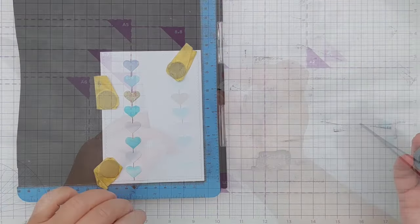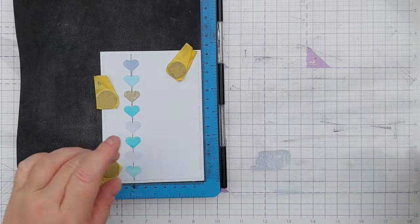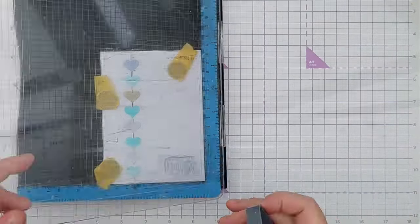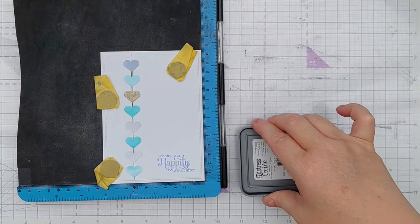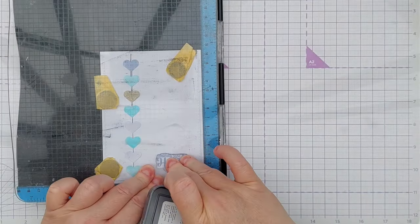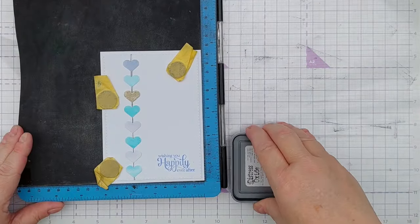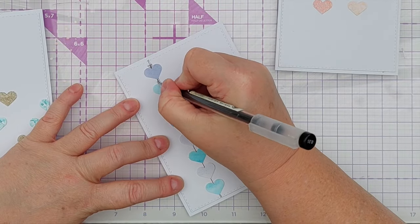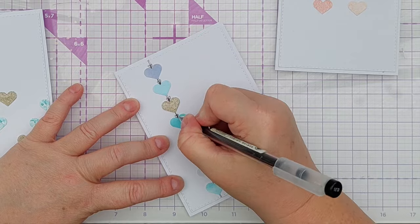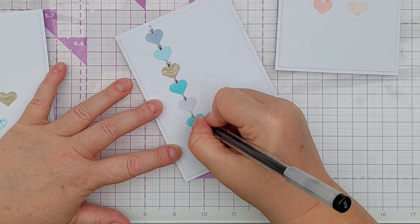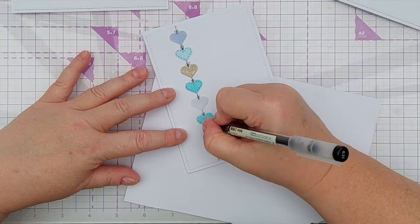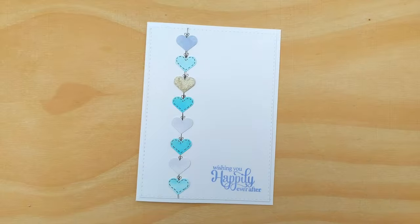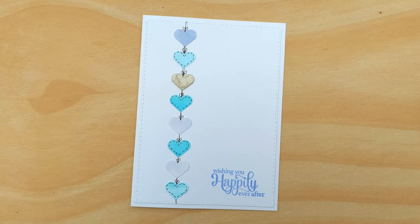Once the glossy accents were dry I put the card in my stamp positioner and stamped on a wishing you a happily ever after sentiment in shaded lilac so that it matched the lilac hearts. I did feel that the hearts needed a little something extra. They were looking a bit plain. So I doodled on a bow on the top of each heart and then I doodled on some stitching around the edges of the blue hearts and called this card done.